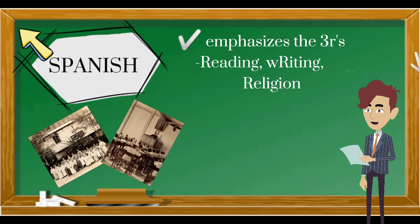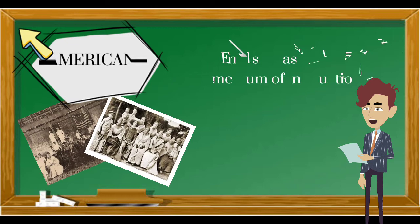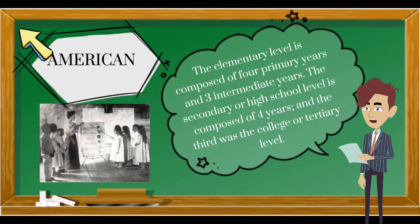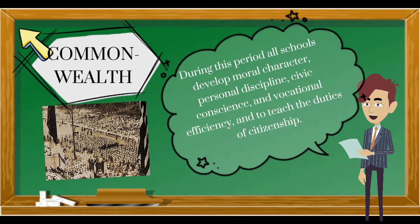During the Spanish period, the main readings were mostly the catechismo, and the method of instruction was mainly individual instruction. During the American period, the elementary level was composed of four primary years and three intermediate years, the secondary or high school level was composed of four years, and the third level was tertiary.